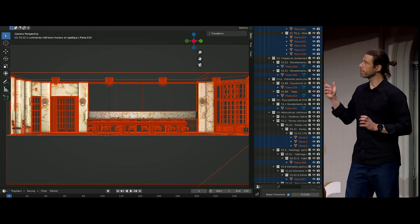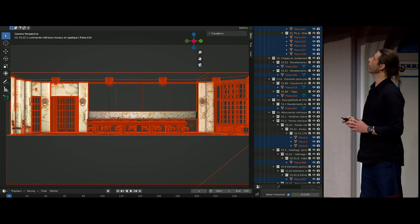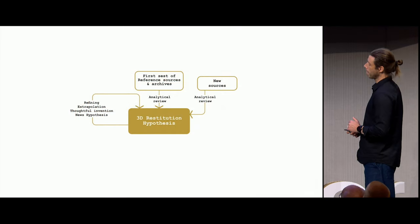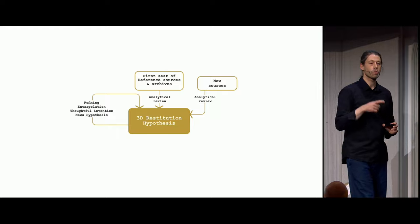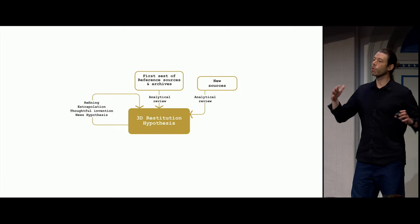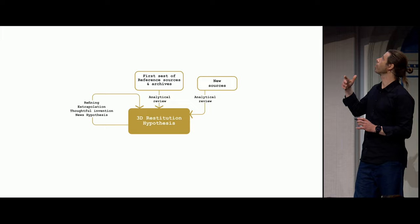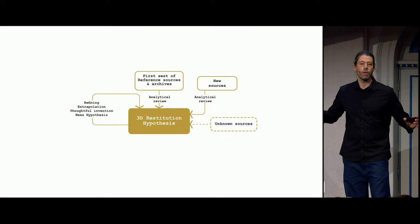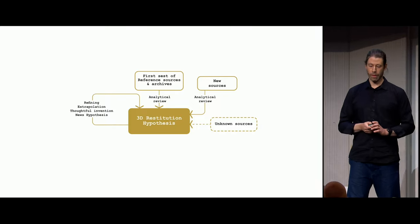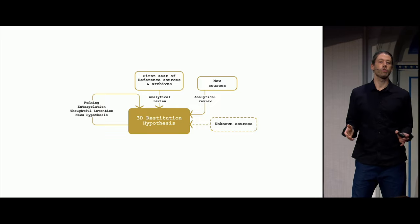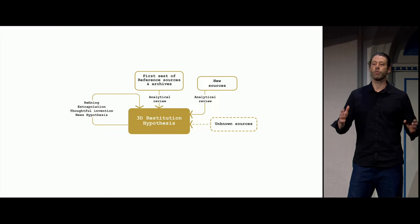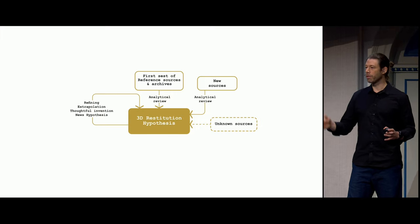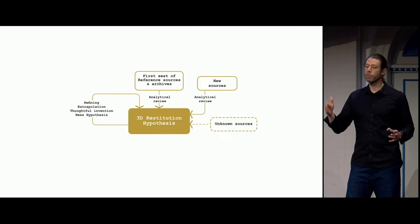For instance, this is the study of the marble of the dining room of the Palais Stoclet — here with the mosaic. The process is recurrent and always needs to remain open for new sources and unknown sources, because new information might turn up. In the end, a 3D restitution hypothesis is just a snapshot of a state of knowledge — when we run out of time or money, we have to stop, but that doesn't mean the project is over.